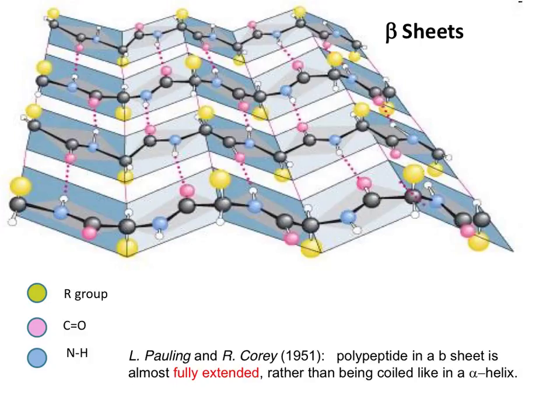There are two different kinds of beta pleated sheets. They are parallel when they run on the same direction that can be represented with the arrows, or anti-parallel when they run on opposite directions.